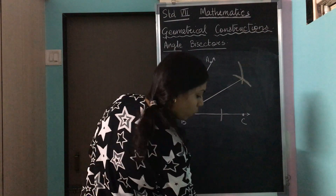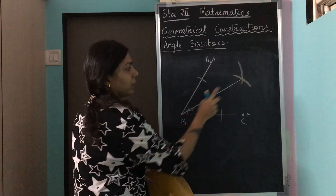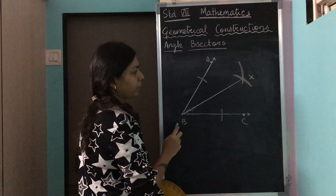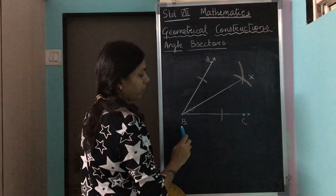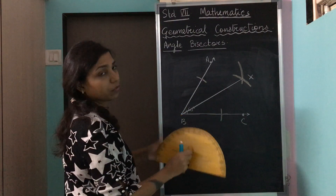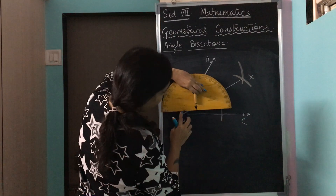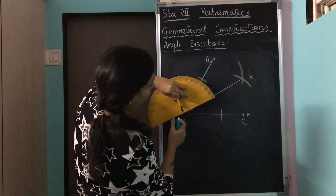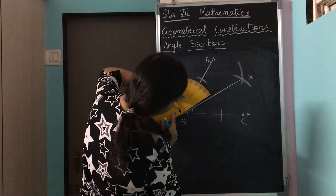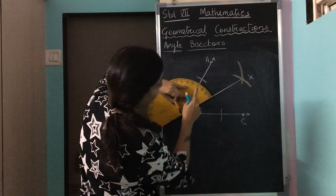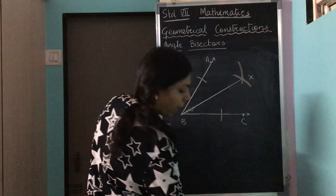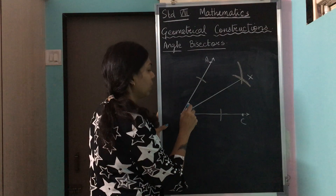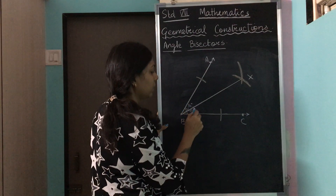Then we take the ruler and connect the X mark to point B. Now when we measure, we have got two angles. Let's name the intersection point X. We have angle ABX and angle XBC. Let's measure to find out if they are both 30 degrees — keeping the zero mark on point B, 30 degrees on each side. So both angles are 30 degrees each.